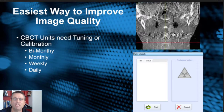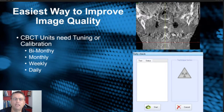Cone beam CT units need tuning or calibration routinely. You should look into your manuals and see whether or not your machine requires bi-monthly, monthly, weekly, or even daily calibrations. We have several different machines from different manufacturers and some require a daily calibration while others have longer periods, but it really is a great way to help improve your image quality without having to do much work.